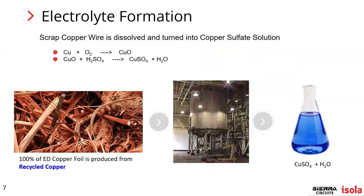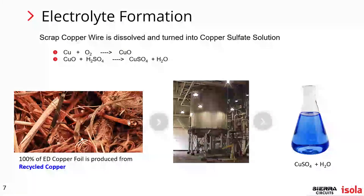Starting with the electrolyte formation, these generic chemical equations show what's going on: they take raw copper and create a copper sulfate solution. There's a picture of one of the dissolving tanks. The recycled copper foil can come from many sources — at Circuit Foil Luxembourg, they use a one-inch strip used to seal tin cans for food. Dump truck loads of those strips are brought into the plant, dissolved, and made into copper foil.